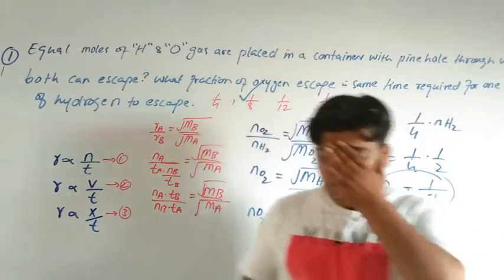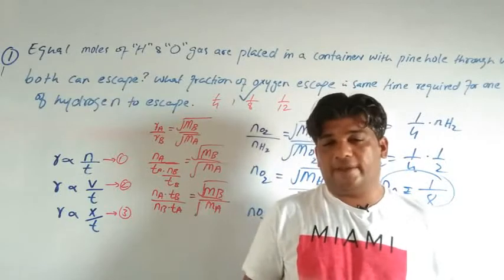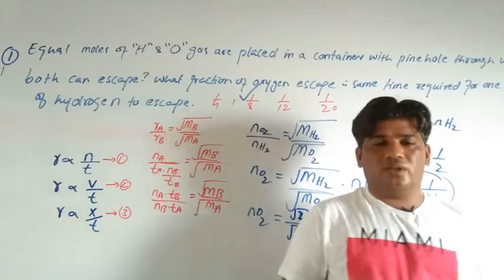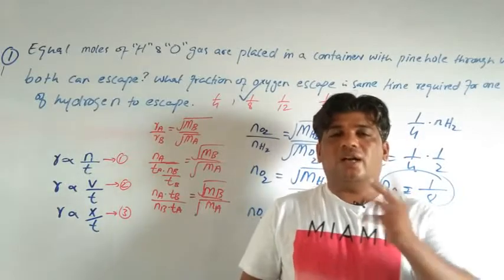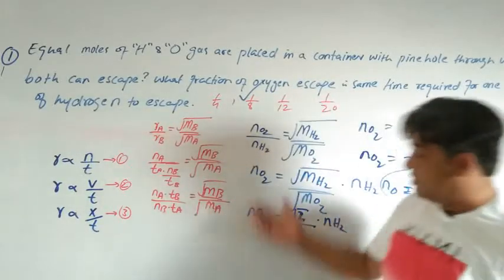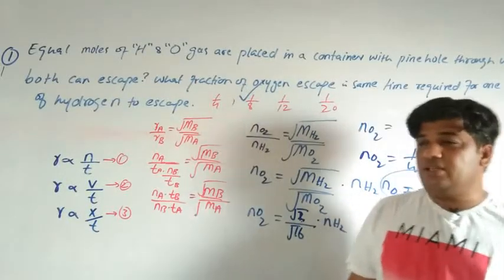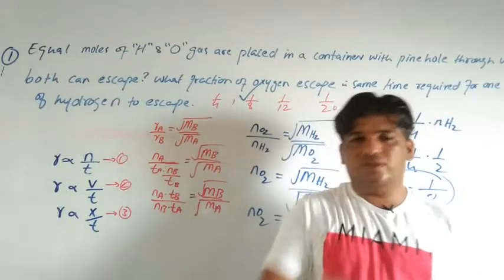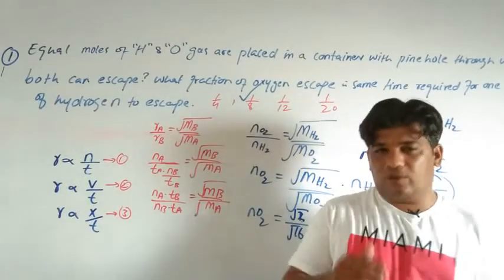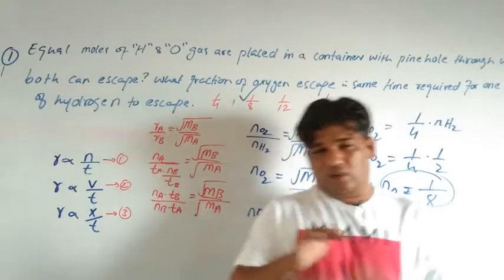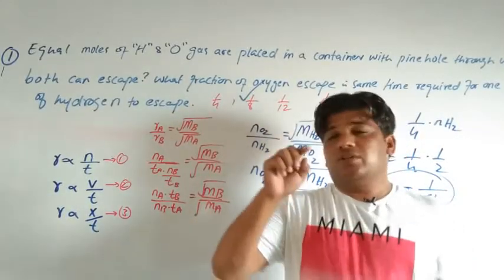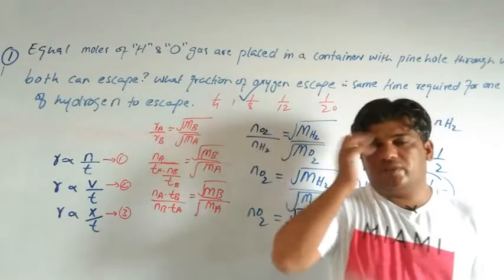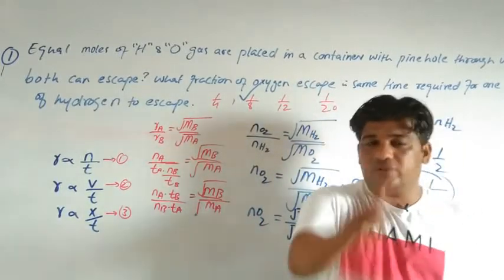MCQs can also ask: which gas has the highest rate of diffusion? Remember, the gas with the greater molar mass or density has a lower rate of diffusion, and vice versa. If multiple gases are given, calculate their molar masses, then rank them — the lowest molar mass gives the highest rate of diffusion, and the order follows accordingly.